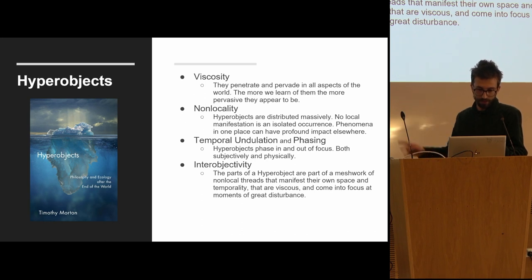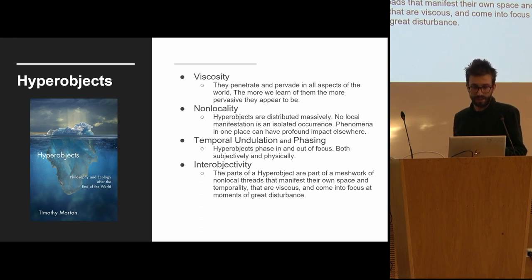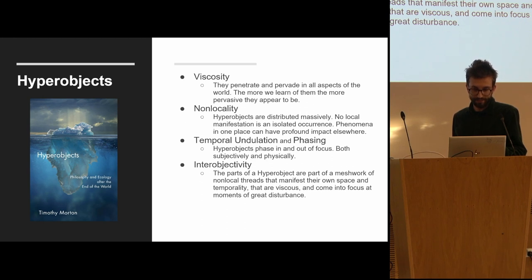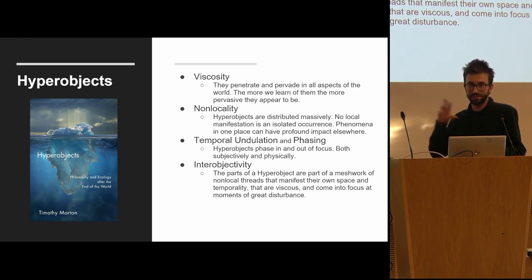There are several key themes from Tim Morton's book that we think are useful when using archaeology to address climate change. First is that they are viscous — they pervade, linger and penetrate as well as being resilient. Almost everything that happens in the world contributes to global warming, from how we eat to how we travel. Secondly, climate change is non-local. Global warming means severe weather events are more and more common: wildfires in California and Australia, floods in Pakistan, desertification in Central Asia and West Africa. Although we can't link any one of those events to global warming, we know global warming is making all these events more severe. No manifestation of the hyperobject is isolated — although these appear to be different phenomena, they're ultimately one part of a greater phenomenon.